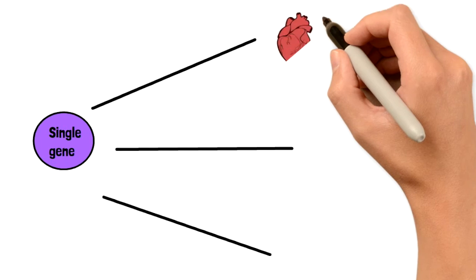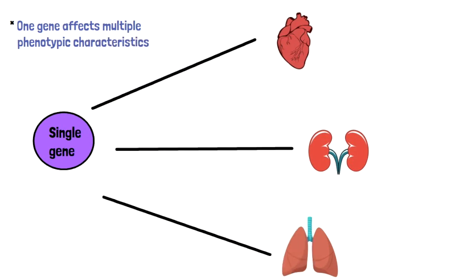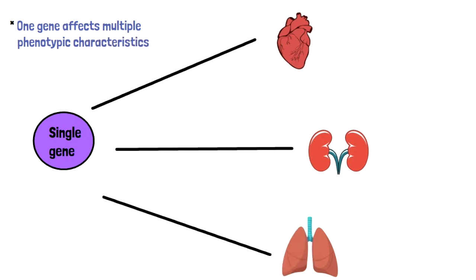Now these multiple effects can be vast and very different. They can range from things like one single gene causing cardiomyopathy, renal stenosis, and lung disease. All very different effects. And that's what pleiotropy essentially is. Now let's talk about real life examples where we see pleiotropy.